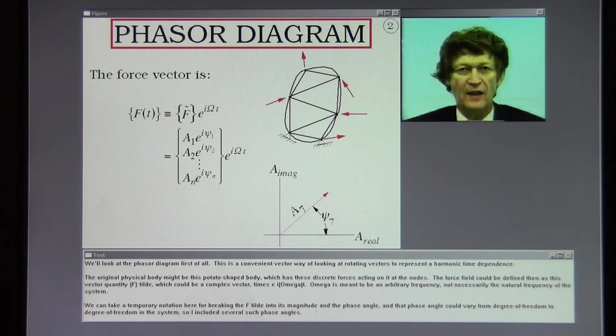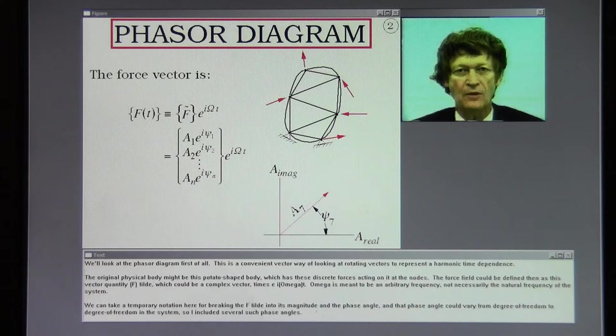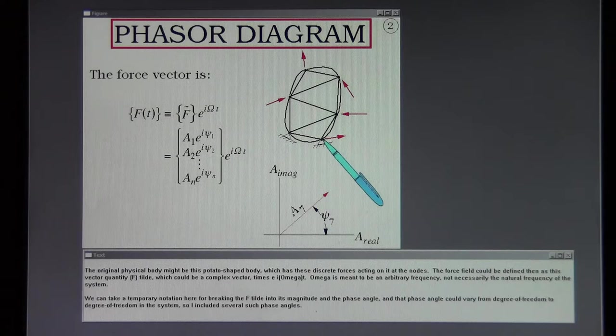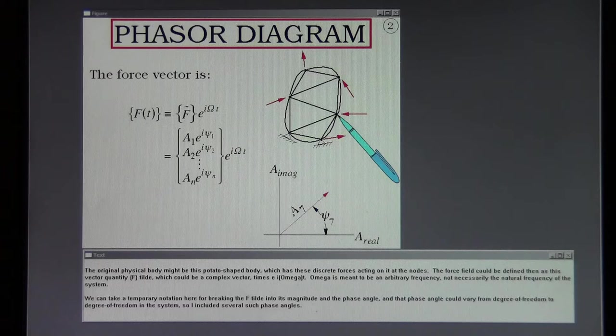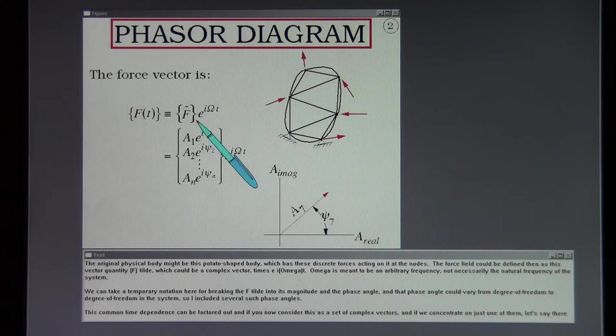We'll look at the phasor diagram first of all. This is a convenient vector way of looking at rotating vectors to represent a harmonic time dependence. The original physical body might be this potato shaped body which has these discrete forces acting on it at the nodes. The force field could be defined then as this vector quantity f tilde which could be a complex vector times the e to the i omega t.